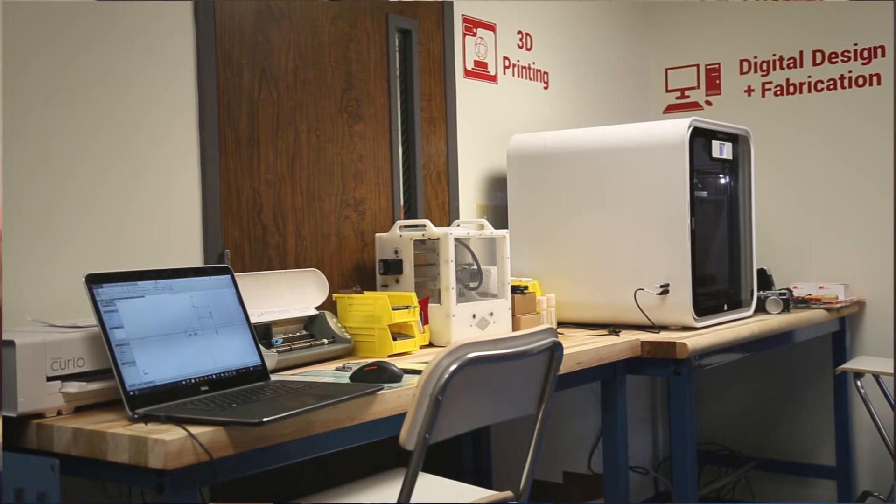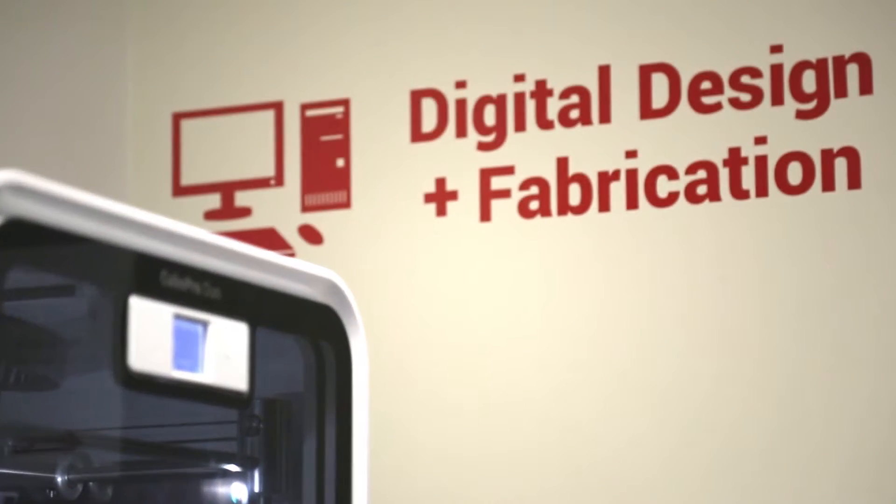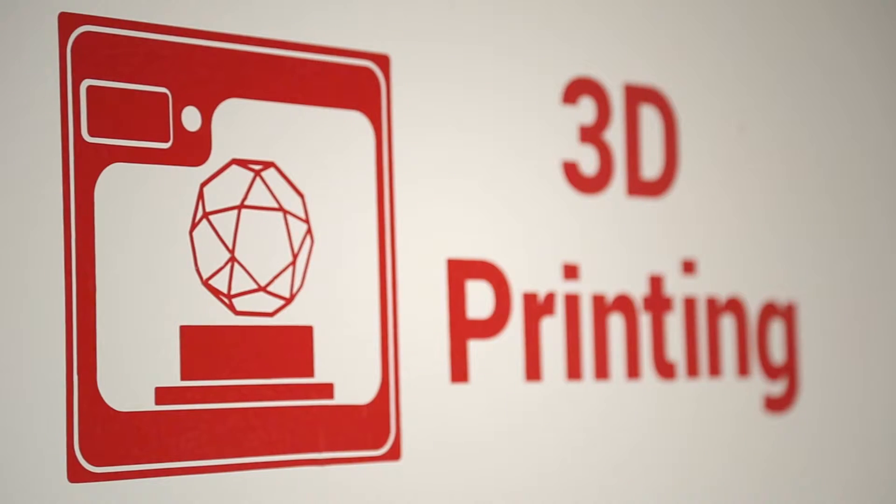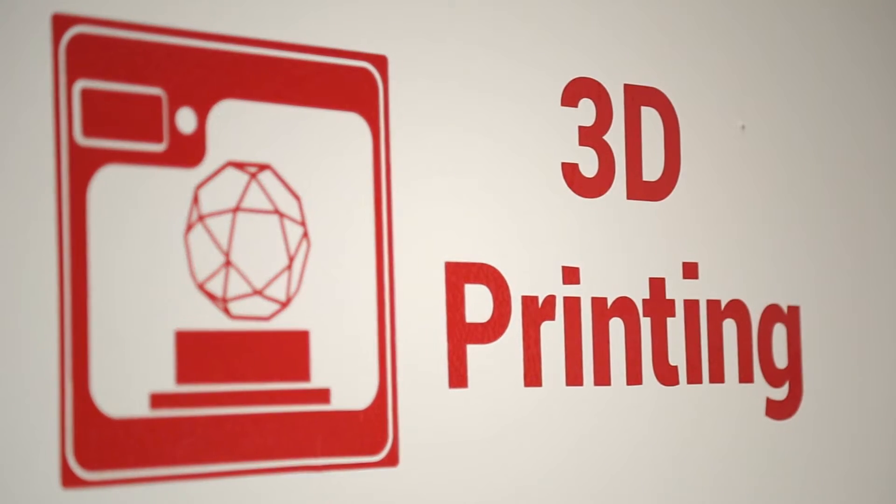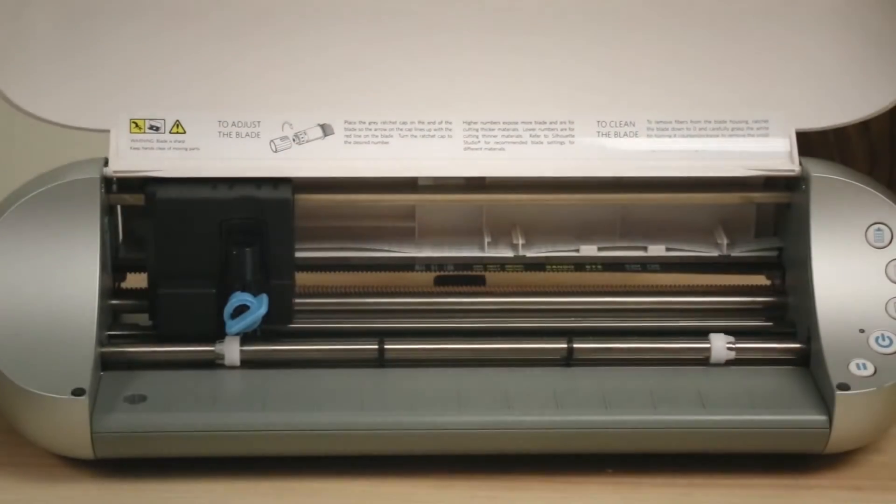So here as we come into the space you can see that we've got a two-part space. Out here in the vestibule we've got what we call digital fabrication. So using computers to design different shapes both in two and three dimensions and use machines to cut those shapes and build the three-dimensional models.